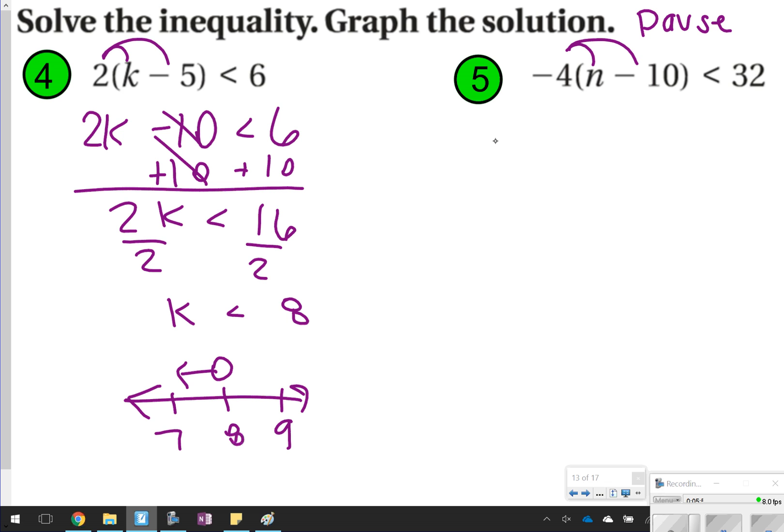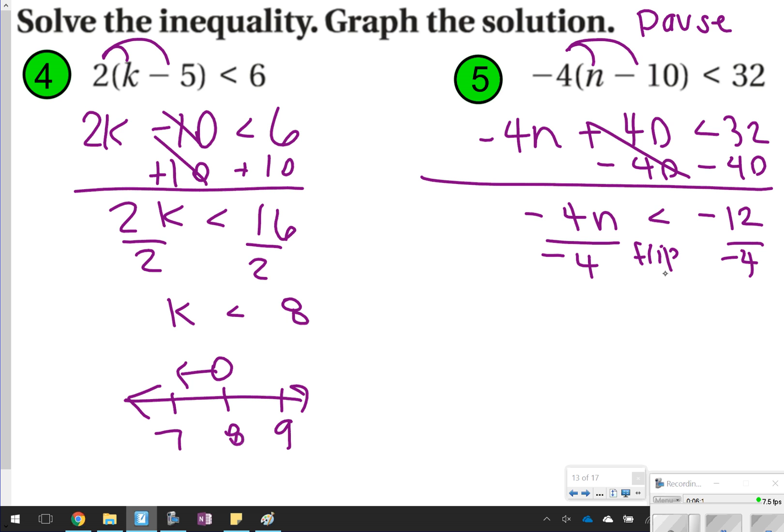Number 5, distributing negative 4. So negative 4n plus a positive 40 is less than 32. I'm going to subtract 40 from both sides. These 40s cancel out. I'm left with negative 4n is less than negative 12. I am dividing by a negative number, and because I'm doing that, I'm going to flip my sign to make it greater than. n is greater than 3. So my number line, I'll have 2, 3, 4. Open circle pointing to the right. How did we do?